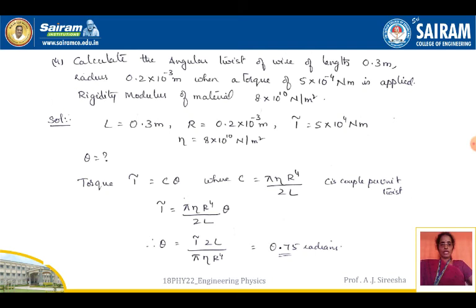Substituting all values: τ = C·θ where C = πηr⁴ / 2L. Tau is already known and given. We need to determine θ; all other values — tau, η, R, and L — are given. Substituting all values and calculating θ, we get θ = 0.75 radians. This is the solution for this numerical.